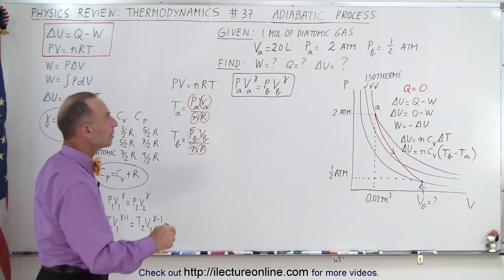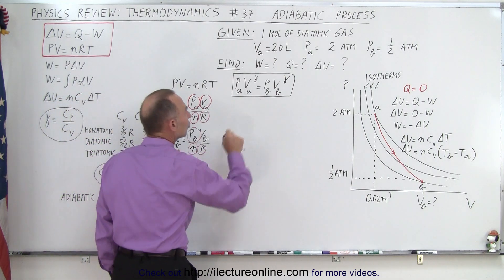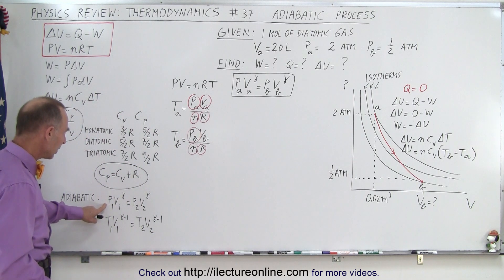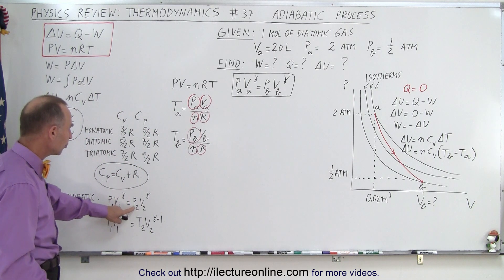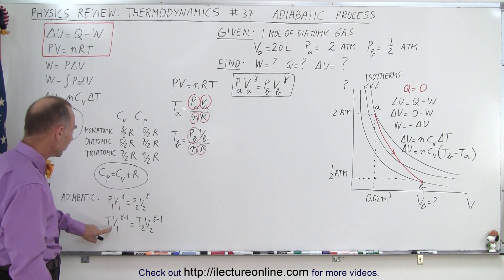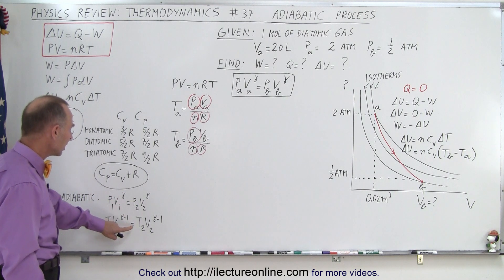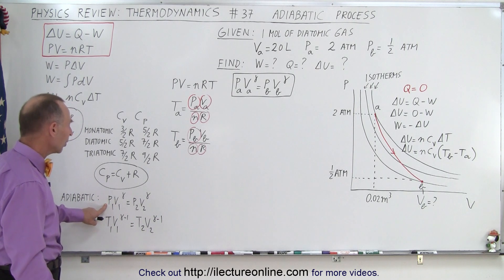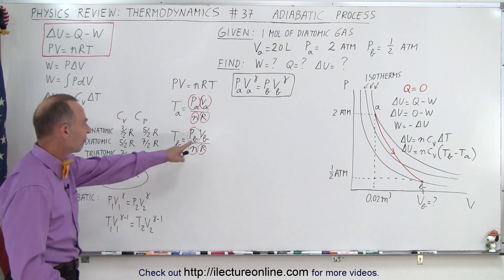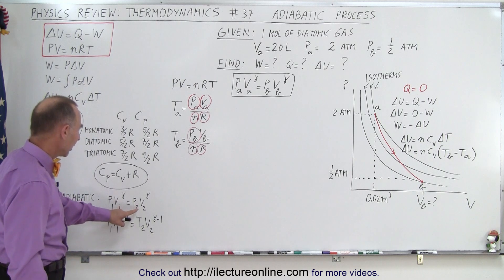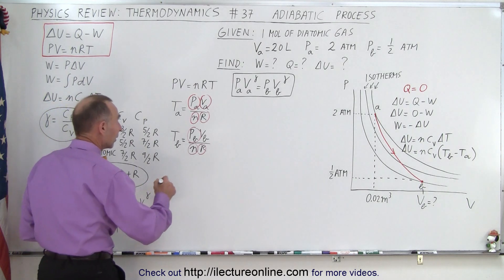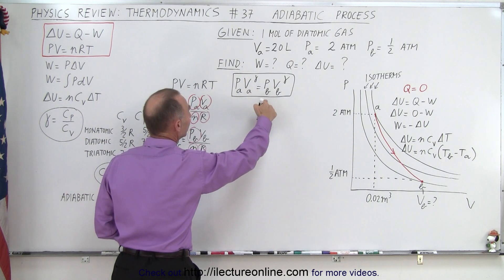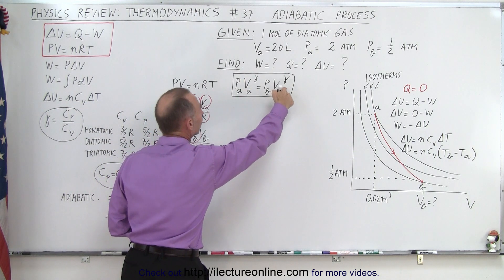So to do that, we need to use one of these two equations that are peculiar for the adiabatic process. We have them on the list right here. P1 V1 to the gamma equals P2 V2 to the gamma, and T1 V1 to the gamma minus 1 equals T2 V2 to the gamma minus 1. We pick this one because we're trying to find V at B, and so essentially what this equation then becomes is it becomes P at A times V at A to the gamma equals P at B times V at B to the gamma.